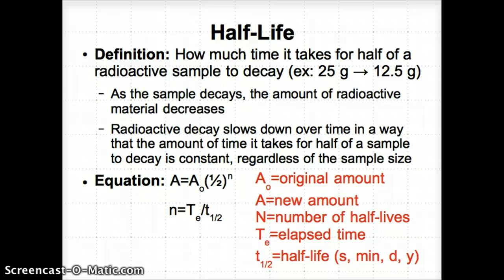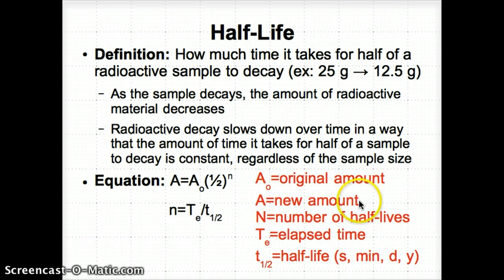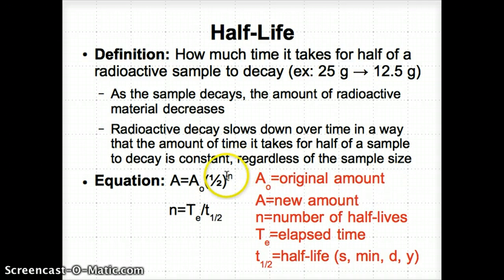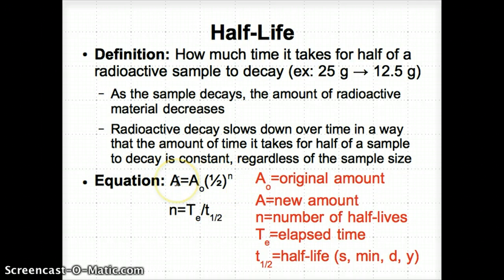The equation we use for half-life is as follows. We have A, which is the new amount of a specific material after halving it a number of times, which equals A₀, the original amount, times (1/2) to the N, where N is the number of half-lives. So how many half-lives have passed is the exponent of one-half. You multiply that by the original amount and that gives you the new amount.